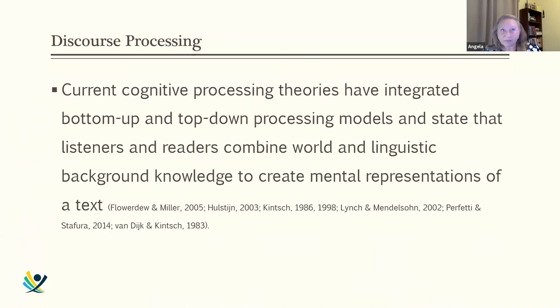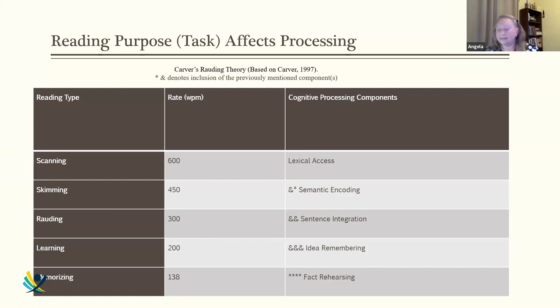Those were prominent theories years ago and were treated as separate. Current cognitive processing theories of reading have integrated both, so we know most readers are doing bottom-up and top-down simultaneously — this is true for listening as well. Readers combine world knowledge with linguistic knowledge. If your linguistic level is below the text, you won't be able to read it even if you know a lot about the topic. Since the 1990s, we've known that reading purpose or task affects what's going on in your brain and the speed at which you read.